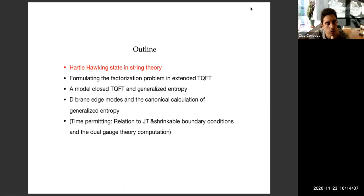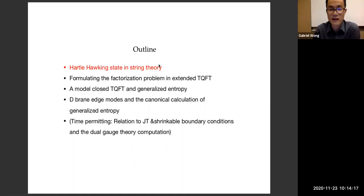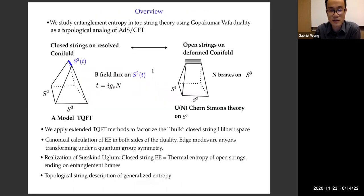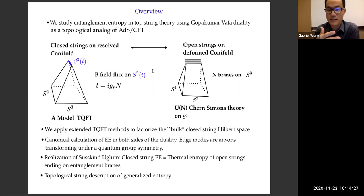Question: Could you explain why string theory is a topological quantum field theory? I usually think of those as not the same axiomatic framework. Answer: It is not generally the same. It's somewhat of a miracle that in this case, the topological string theory can have its string field theory — the second-quantized theory in target space — formulated as a TQFT. We're going to look at a very particular class of target spaces for the A-model.